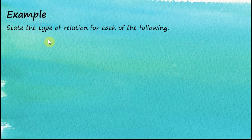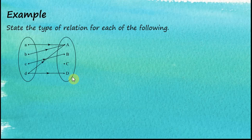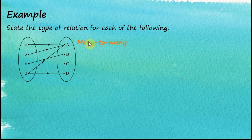Let's see this example. State the type of relation for each of the following. For the first one, we can see that we have three objects mapped to one image, and at the same time, we have one object mapped to two images. So this is a many-to-many relation.